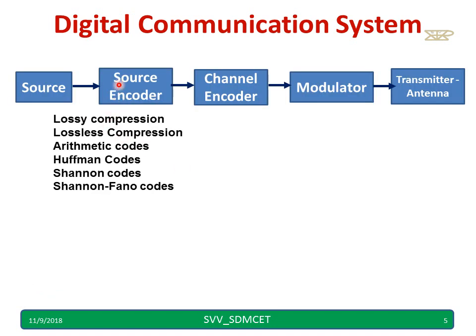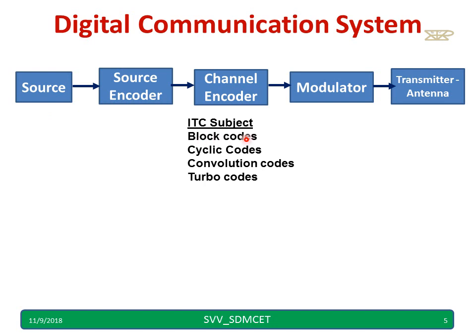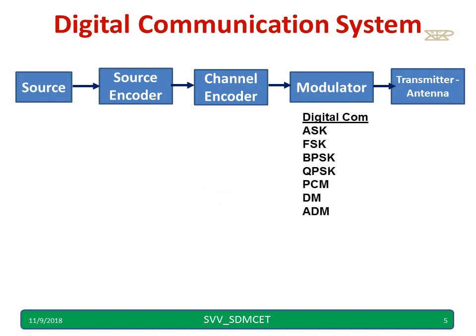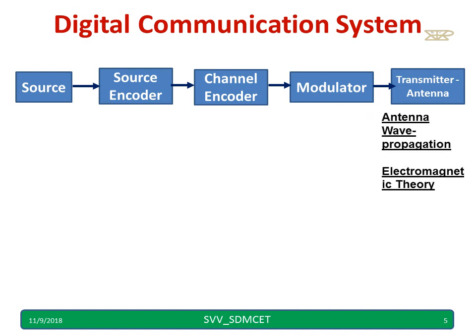There are many techniques for source encoding that you may study in engineering — lossy compression, lossless compression, arithmetic codes, Huffman codes, Shannon codes, Shannon-Fano codes, etc. For channel encoding, you may study block codes, cyclic codes, convolutional codes, turbo codes, and many other types in your ITC subject. For the modulator in digital communication, you may study ASK, FSK, BPSK, QPSK, delta modulation, adaptive delta modulation, etc. You may also study the antenna and wave propagation block in depth, and you may have already studied electromagnetic theory related to wave propagation.